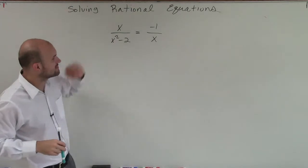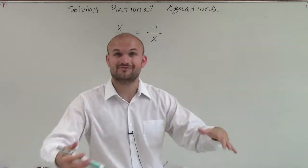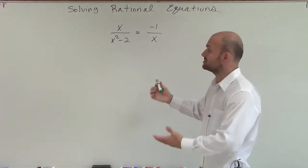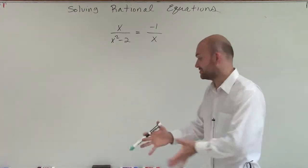OK, welcome. In this case, what we have is a ratio equal to another ratio, so therefore we have a proportion. It's still a rational equation, but it's a proportion as we have just one ratio equal to the other ratio.